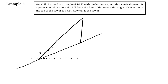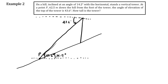Remember, the angle of elevation is measured from the horizontal. So if this is horizontal, I also need the horizontal at the top. The given 43.6 degrees is the angle of elevation from point P to the top of the tower, and the 14.2 degrees is the inclination of the hill. Since these are alternate interior angles formed by a transversal, this angle is also 43.6 degrees.